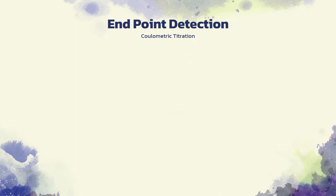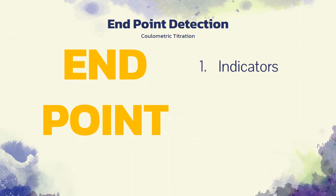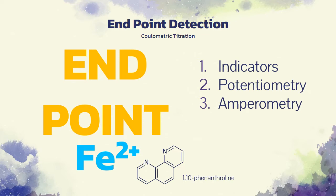Coulometric titrations, like their volumetric counterparts, require a means for determining when the reaction between analyte and reagent is complete. Generally, the endpoint indicators described in volumetric methods are applicable to coulometric titrations as well. For example in the titration of iron 2+, an oxidation reduction indicator such as 1,10-phenanthroline can be used. As an alternative, the endpoint can be determined potentiometrically or amperometrically. These are used in Carl Fischer titrators. Furthermore, some coulometric titrations utilize a photometric endpoint.